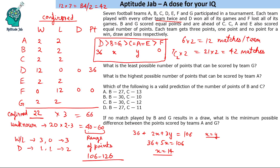With X = 15 and Y = 14, the total becomes 36 + 30 + 42 = 108, which is within the valid range. If we tried X = 14, all teams would be equal, violating the condition. So the minimum value of X is confirmed as 15.